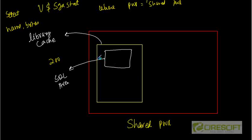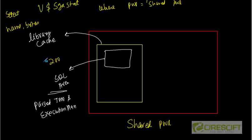The SQL area inside the shared pool contains the parse tree and execution plan of a SQL statement. So whenever we execute 'SELECT * FROM EMP', the parse tree and execution plan are stored there and take some memory. Eventually this area can fill up, and when it does, the LRU algorithm is used to remove old entries and retain newer ones inside the SQL area of your library cache.